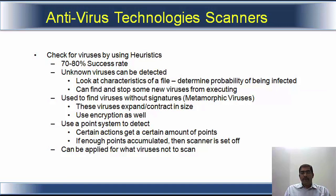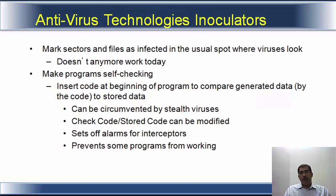It uses a point system to detect — certain actions get a certain number of points. If enough points are accumulated then the scanner is triggered. It can be configured to scan the system for specific viruses. Inoculators mark the sectors and files as infected in the usual spot where the viruses look, so the virus does not look in that spot anymore. However, this does not work in today's environment.